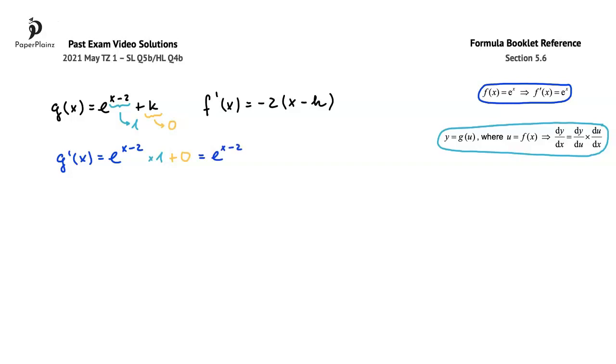You don't have to show all the working out that I've done here, but it is important to write down that the derivative of g(x) is e to the power of x minus 2.